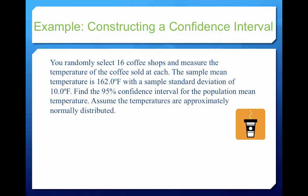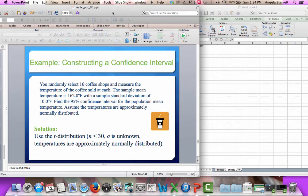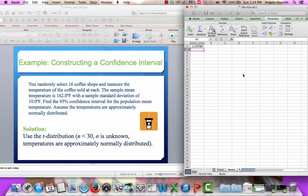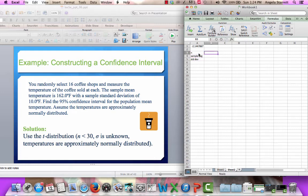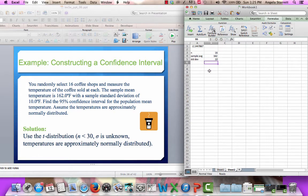Let's go through a problem. We randomly select 16 coffee shops — that's our n, our sample size. The sample mean temperature of the coffee is 162 degrees, with a sample standard deviation of 10 degrees Fahrenheit. So we have a sample size of 16, a sample average of 162, and a sample standard deviation of 10.